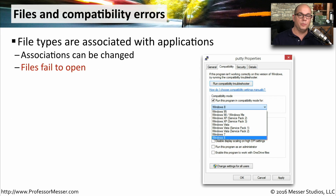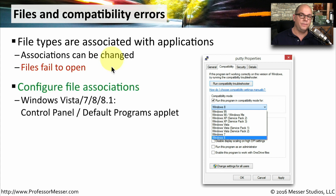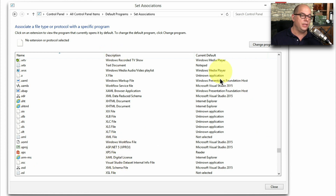File types in Windows are associated with a particular application. For example, any file ending in .docx is a Microsoft Word document, and .xlsx is a Microsoft Excel document. These associations can be changed, and a wrong association can cause a file to open the wrong program or fail to open at all. You can configure file associations in Windows Vista, 7, 8, and 8.1 from the Control Panel under the Default Programs applet, where you can view all extensions, see their descriptions, and define which application runs when you click on each file type.